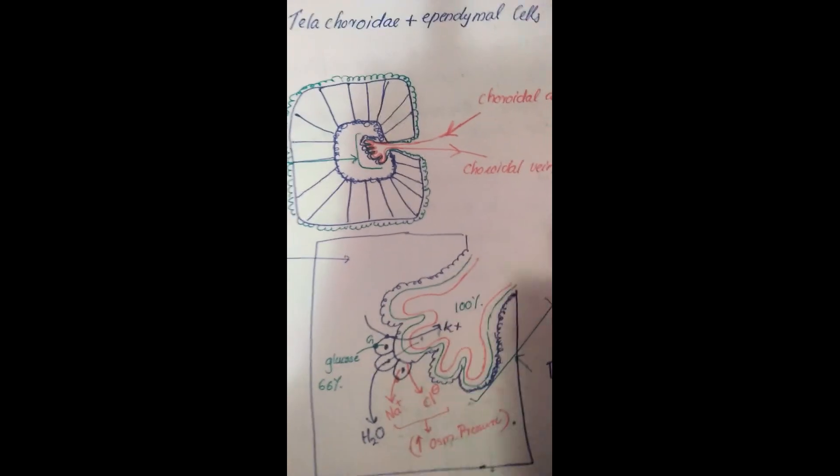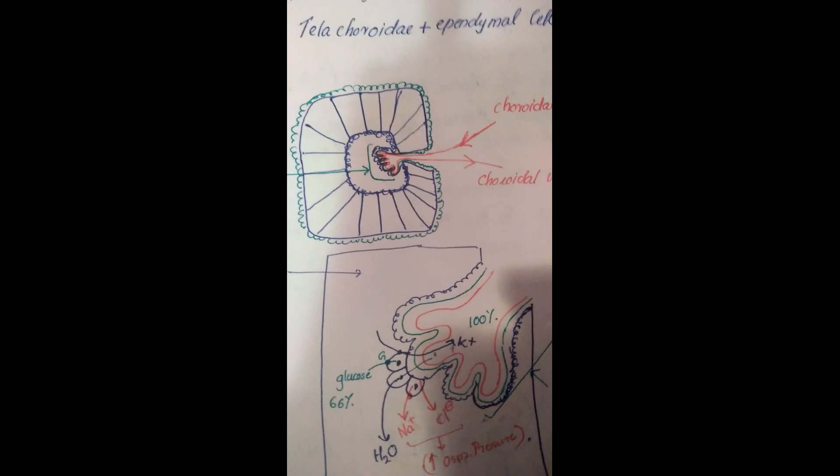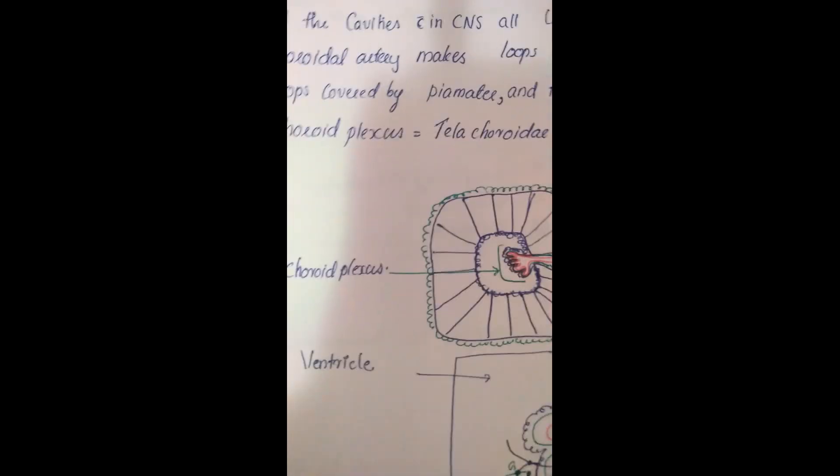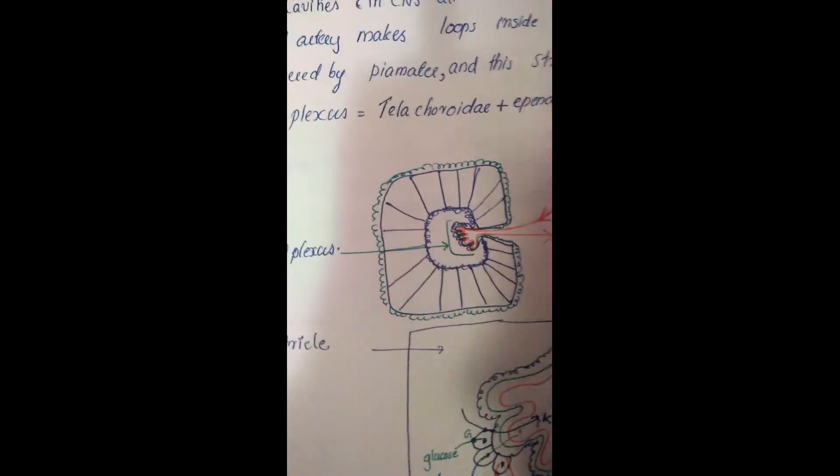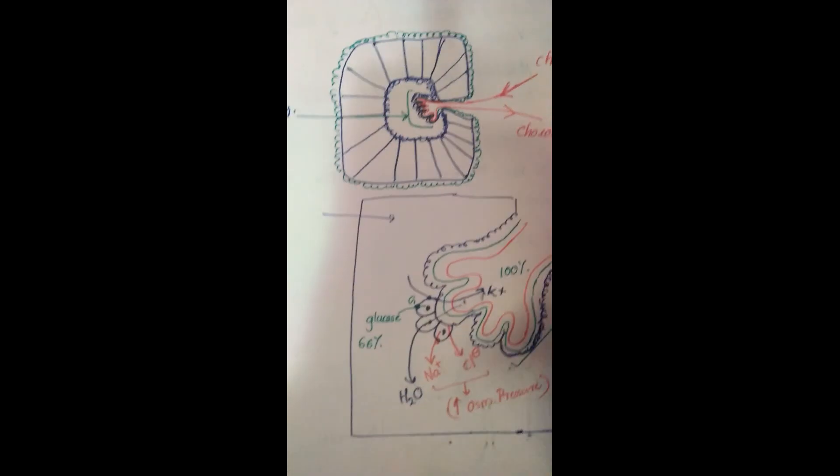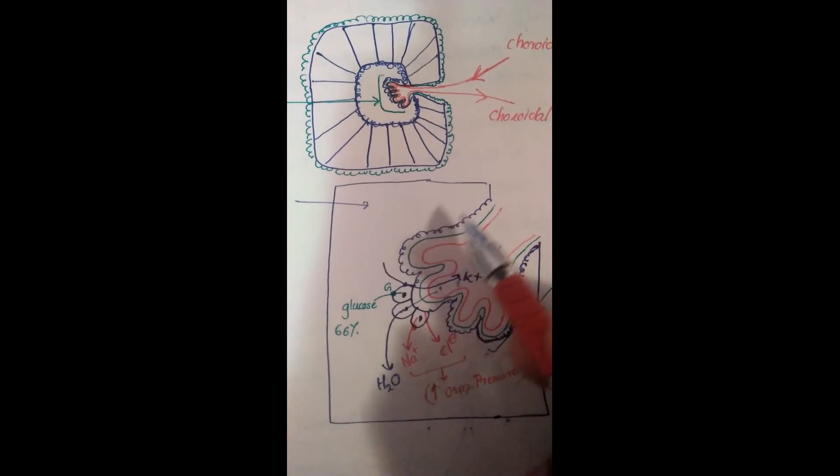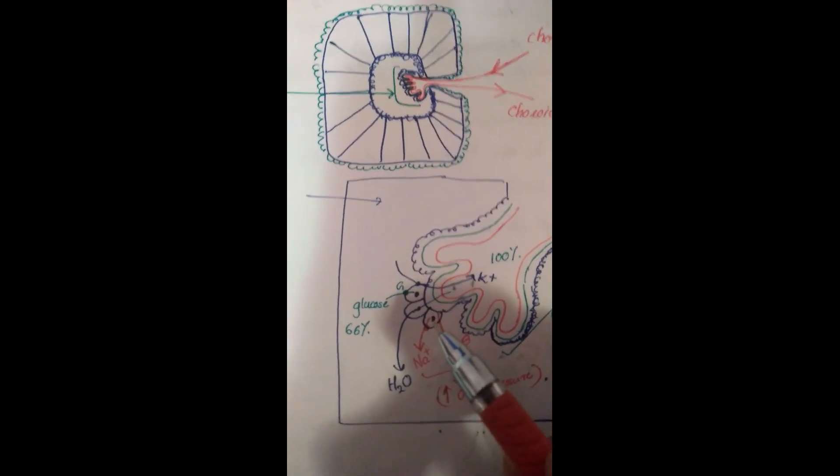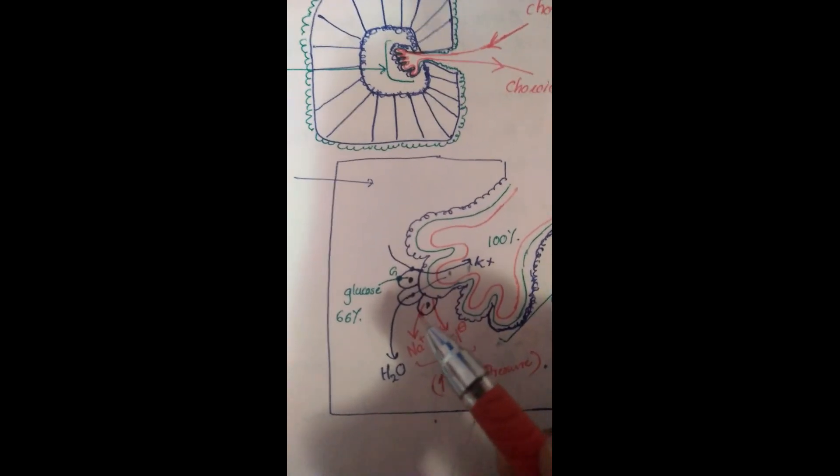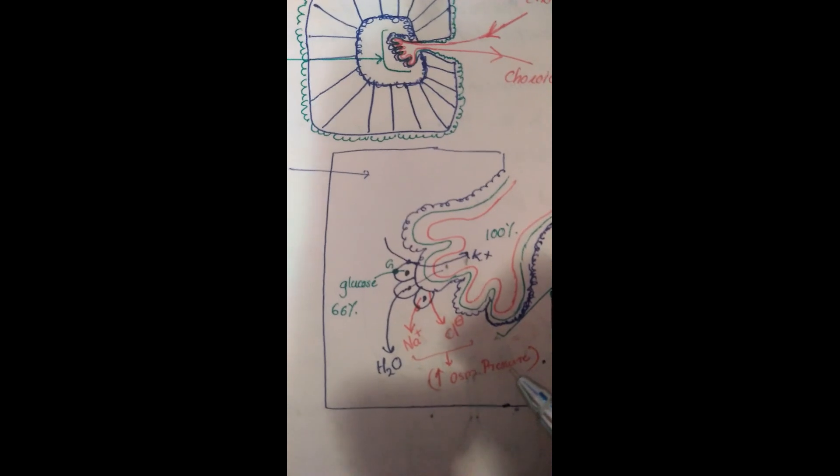If it includes ependymal cells, then we call it choroid plexus. The ependymal cells have special transporters for Na+ and Cl-, which eventually leads to increasing osmotic pressure.